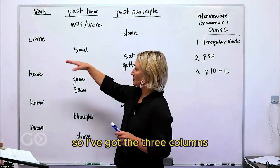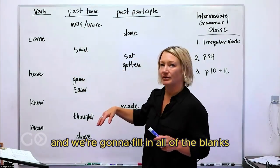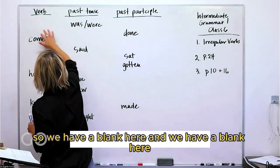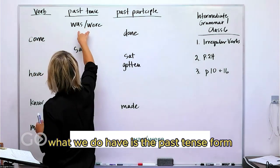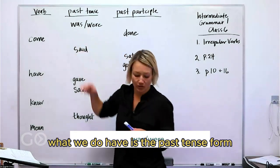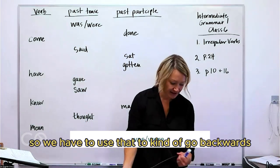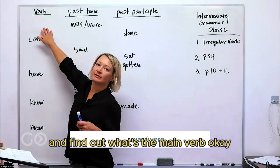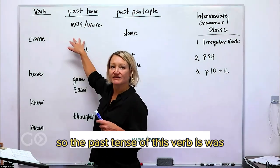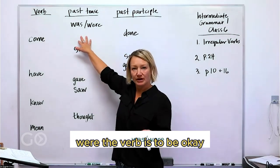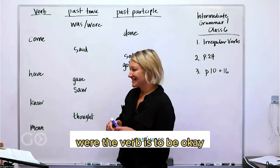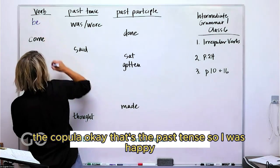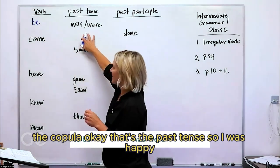I've got three columns and we're going to fill in all of the blanks. We have a blank here and a blank here. What we do have is the past tense form, so we have to use that to go backwards and find out what the main verb is. The past tense of this verb is 'was/were' — the verb is 'to be', the copula.